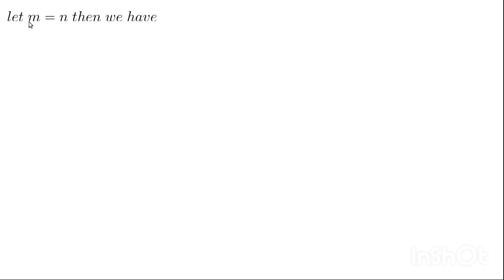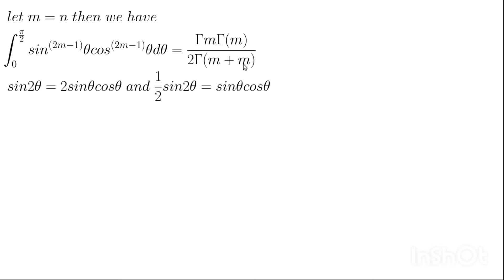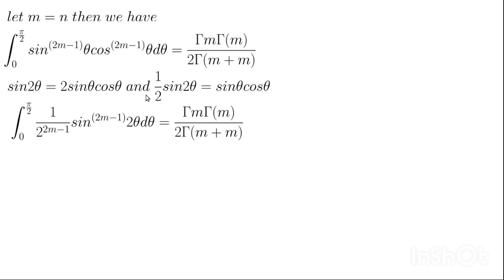If we also let m=n, then both powers become the same: sin^(2m-1)θ·cos^(2m-1)θ, and the gamma expression becomes Γ(m)·Γ(m)/Γ(2m). Recalling the double angle formula sin2θ = 2 sinθ cosθ, we have sinθ cosθ = (1/2)sin2θ. Replacing sinθ cosθ with this in the integral gives (1/2)^(2m-1) · sin^(2m-1)(2θ), so we have (1/2)^(2m-1) times the integral of sin^(2m-1)(2θ) dθ.